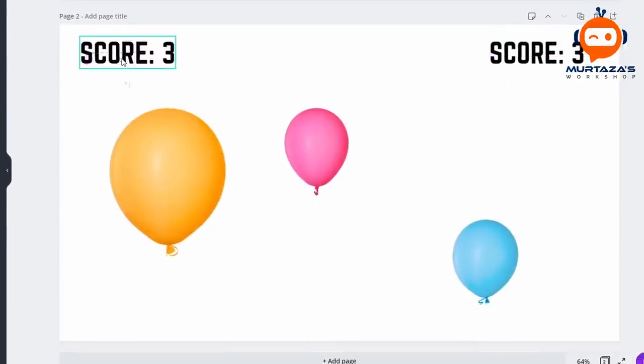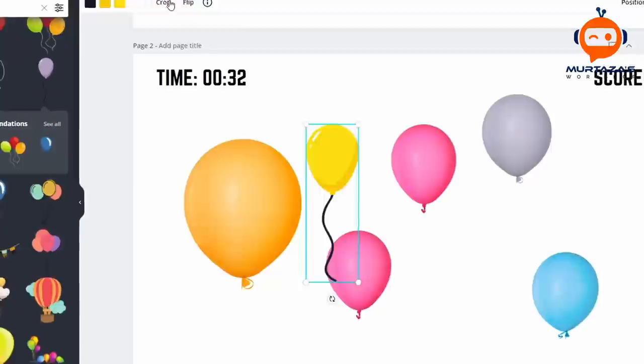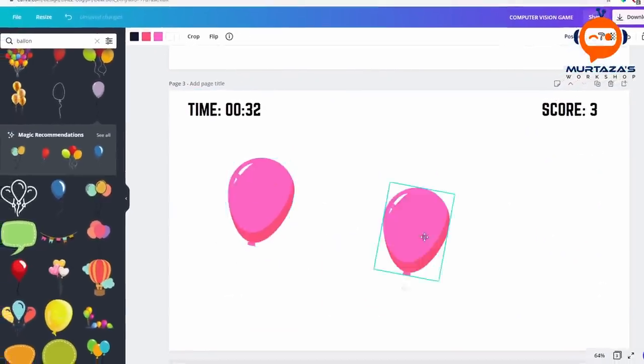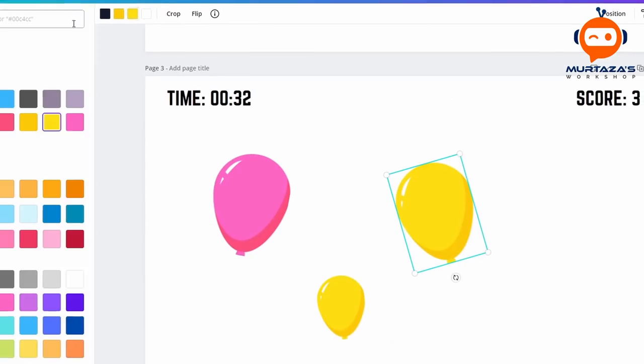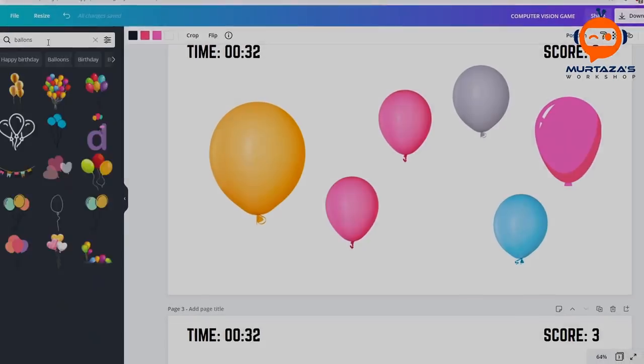I created a simple layout with a white background and added some balloons and text for the score and time. The next step was the choice of balloons. I had to be a little picky here because the choice would reflect directly on the image processing techniques.